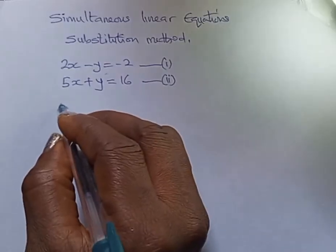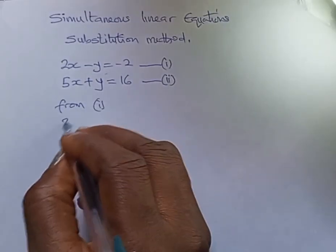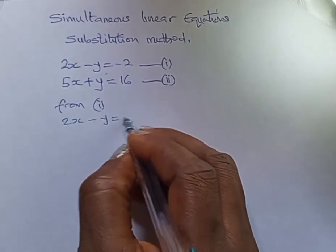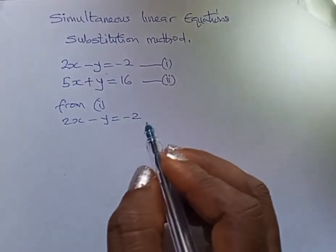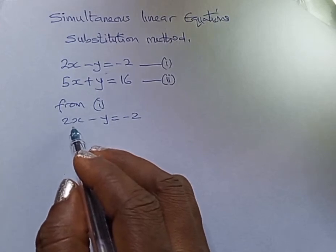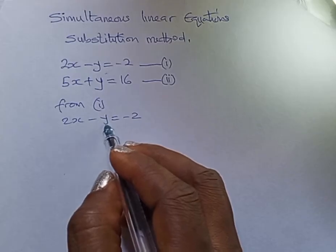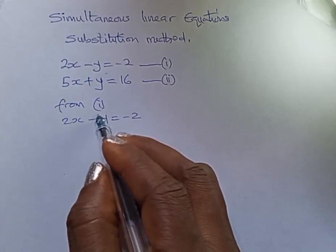Let's go for the first one. From equation one, I have 2x - y = -2. To solve this, we make x a subject of the formula or y as a subject of the formula. I think it's better we choose y because the coefficient is one.